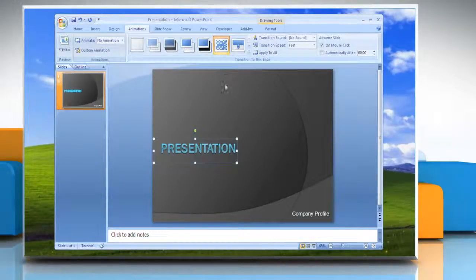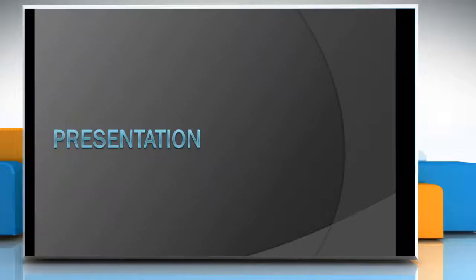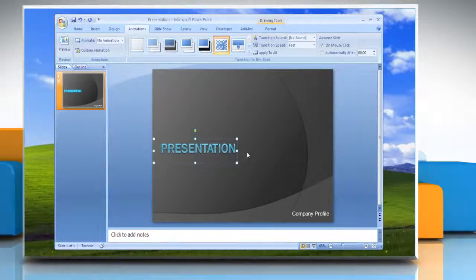Any animation applied to the title box will impact all of the text inside it. But when applied to the text box, it will animate each line of the text in the box separately. Press the F5 key to see a full screen preview. Press Escape to get out of the slideshow. You can stop here or proceed for more animation options.